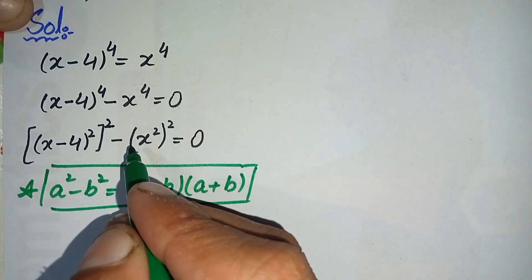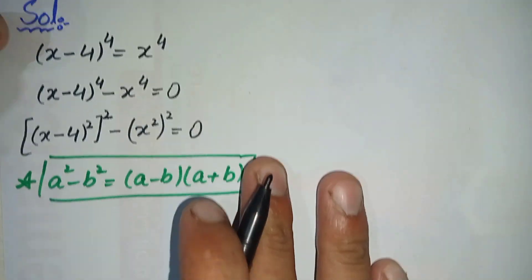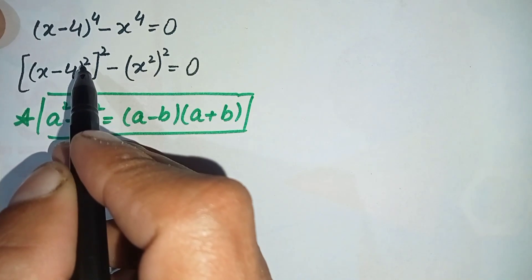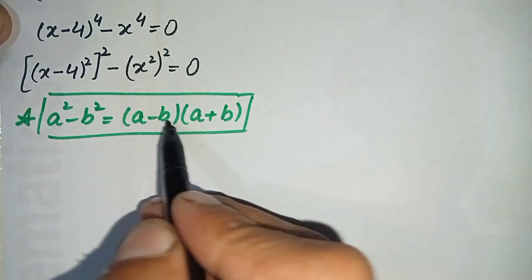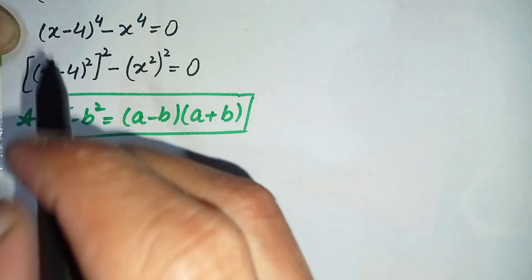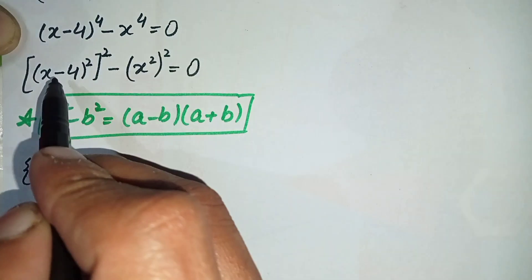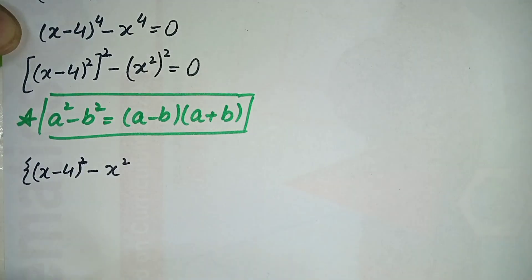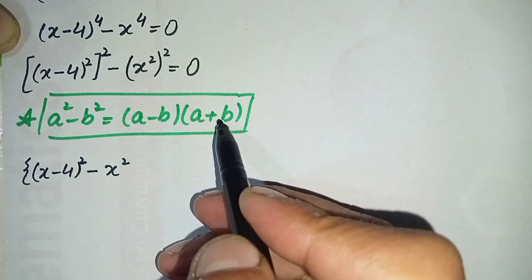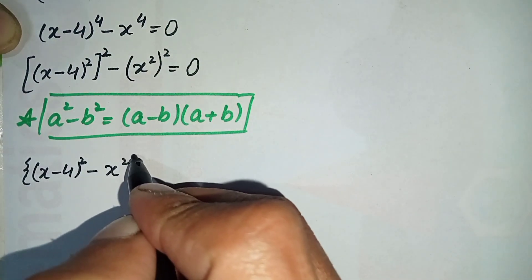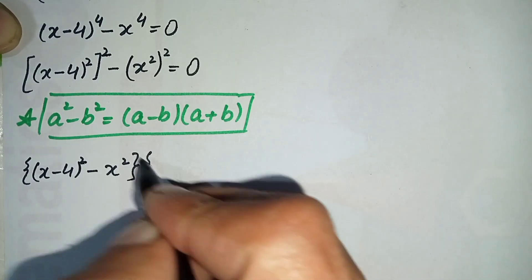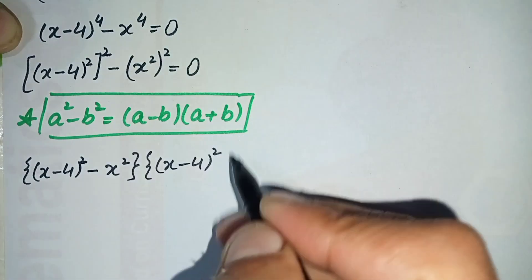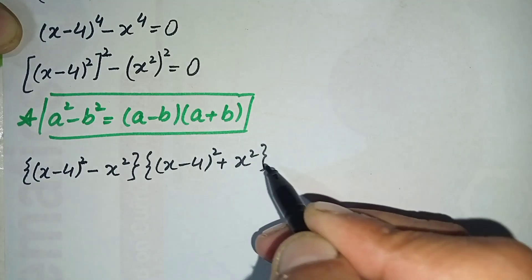The identity is: a squared minus b squared is equal to (a minus b)(a plus b). Applying this identity, here a is (x minus 4) whole raised to power 2, and b is x squared. So we write (a minus b)(a plus b), which gives us: [(x minus 4)² minus x²] times [(x minus 4)² plus x²] equals zero.